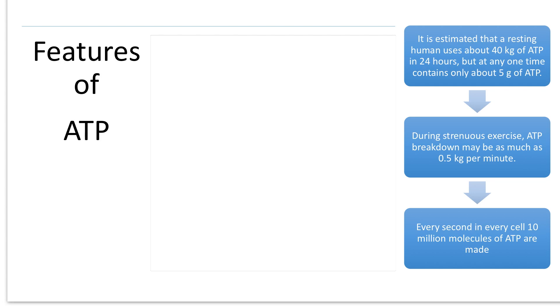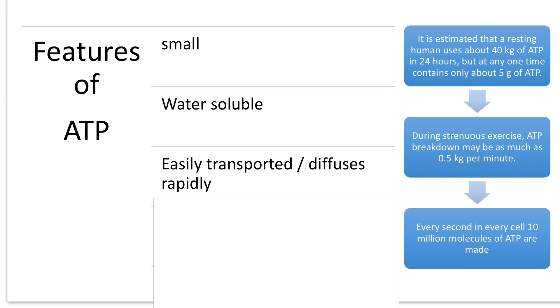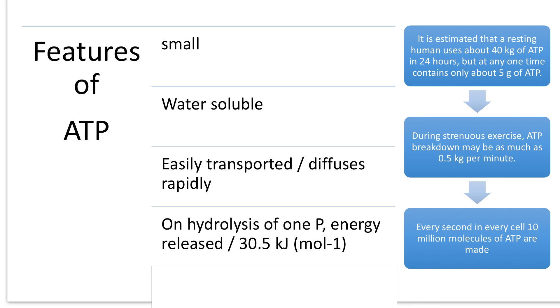What makes ATP a highly suitable molecule for its job? First, ATP is small. Being small lets the ATP molecule easily travel and diffuse. ATP is water-soluble. This is essential for a molecule that needs to be transferred from one part of the cell to another, since it's in the cytoplasm, an aqueous environment. ATP is easily transported and diffuses very rapidly. That's the result of being small and water-soluble. When one of the phosphates of ATP is hydrolyzed, it releases energy, 30.5 kilojoules per molecule of ATP.